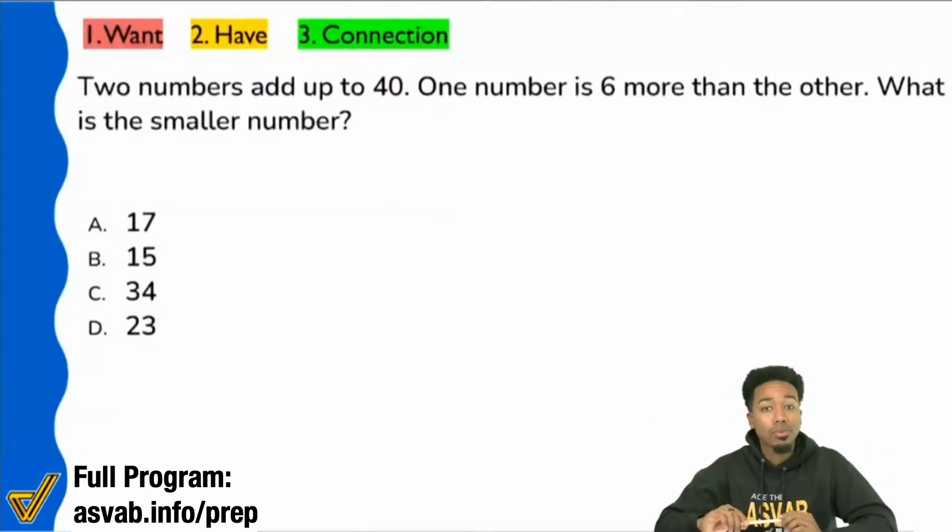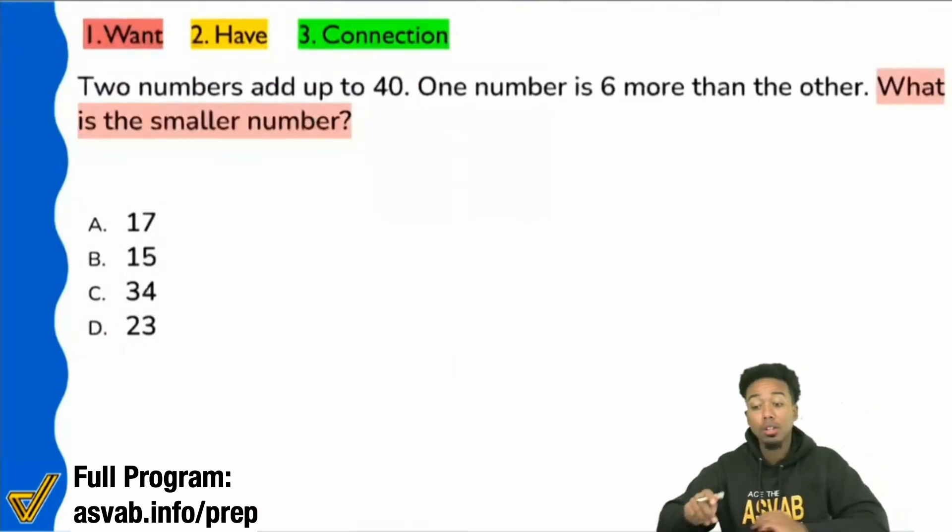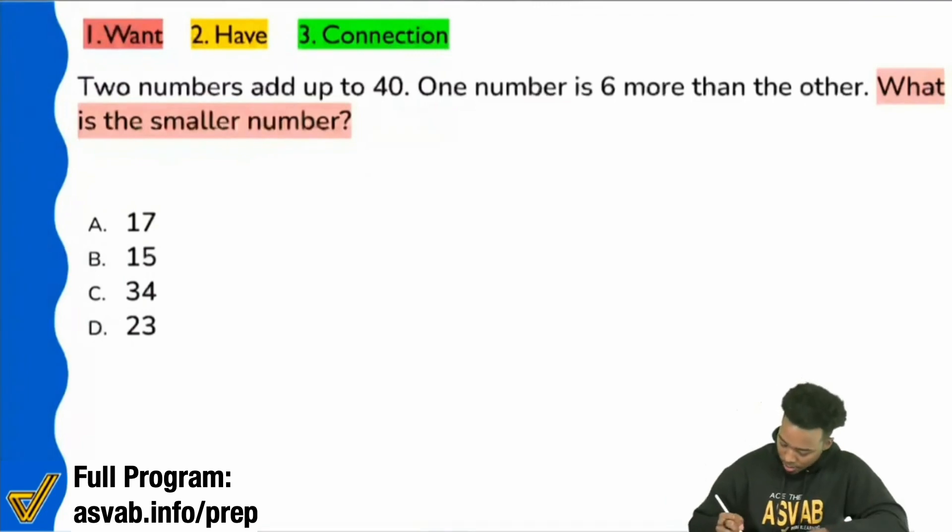So first things first, we have to understand what it is that we're looking for. We're not part of people in a couple of words, very short. What is it that we're looking for in this particular problem? What are we looking for? And Brian, let's keep the conversation focused on today's class. That kind of spamming is going to get you kicked. So small number. Okay, great. So keep it simple. Keep it right there. Keep it to the point. We want to know what the smaller number is. What is the smaller number? Sounds good. So right there, let's write that down.